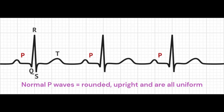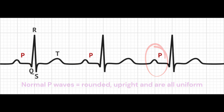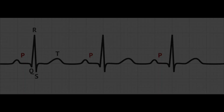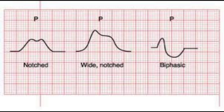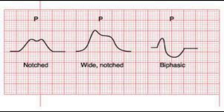On an EKG strip, P-Waves typically appear as small, rounded, and upright deflections that precede the QRS complex. The amplitude, duration, and shape of P-Waves can provide valuable information about the underlying cardiac rhythm and the health of the heart.